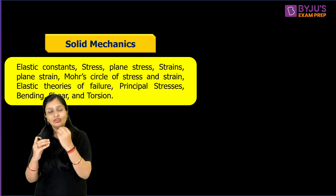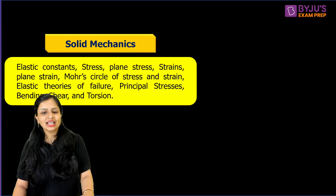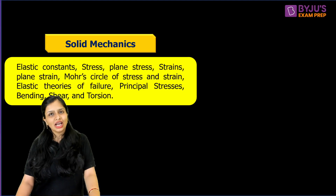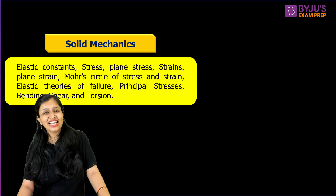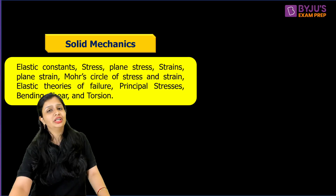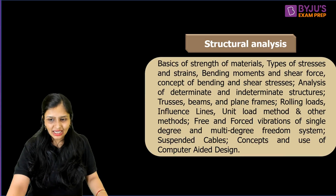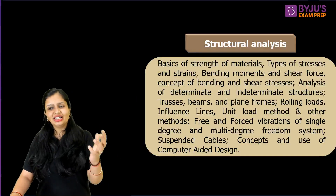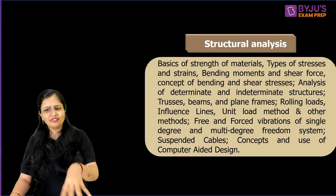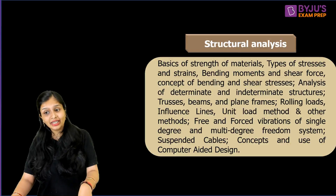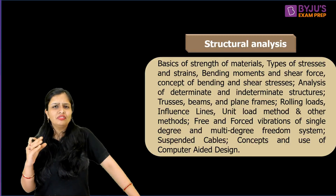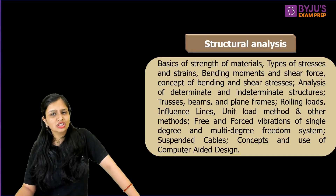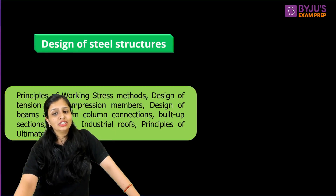Next in Paper 1 is Solid Mechanics: elastic constants, stress-strain, Mohr's circle, elastic theory, principal stress, bending, shear, and torsion — including design parts and codal provisions. Structural Analysis is also important: bending moments, bending stresses, determinate and indeterminate structures, unit load methods, and various other methods. Then Design of Steel Structures — you can't just study plastic analysis like in GATE. You must study tension members, compression members, beam-column connections, girders, industrial roofs, and ultimate load design.